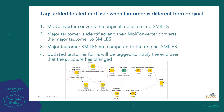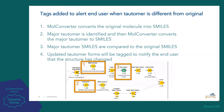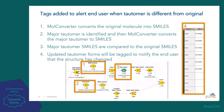Tags are then added to alert the end user when the tautomer defined is different from the original structure supplied in the SD file. First, the Mole Converter converts the original mol file into SMILES. Then the major tautomer is identified and the Mole Converter converts the major tautomer to SMILES as well. The major tautomer SMILES are then compared to the original SMILES, and any updated tautomer form will be added to the alert field in the SD file that is generated at the end.